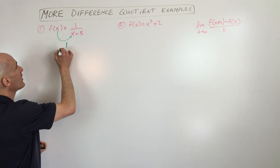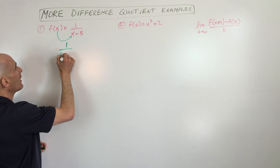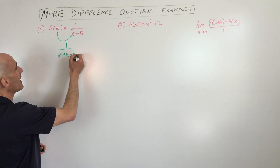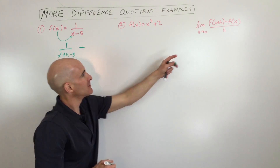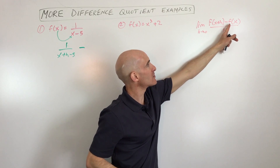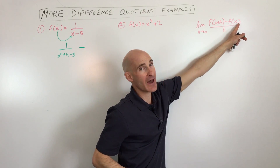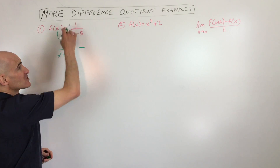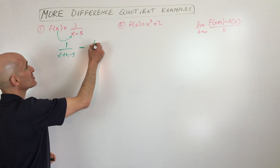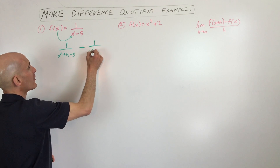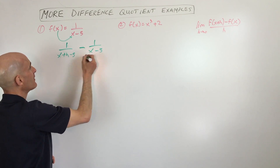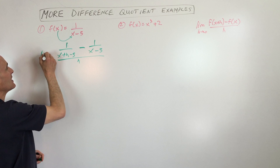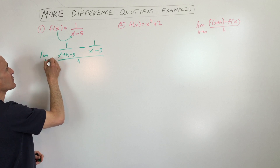So this is going to be 1 over (x plus h minus 5) minus — that's the minus here — f of x. I just think of f of x as just this whole function, the original function. So: 1 over (x minus 5), divided by h, and it's the limit as h is approaching 0.